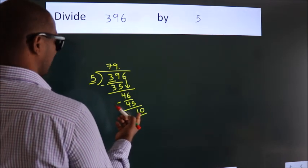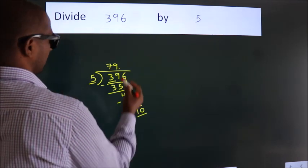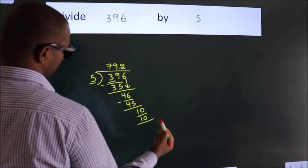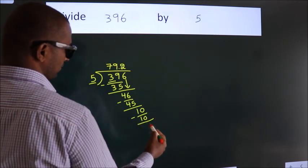When do we get 10 in 5 table? 5 2s 10. Now we subtract. We get 0.